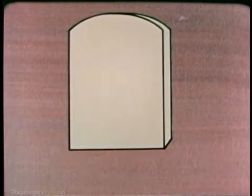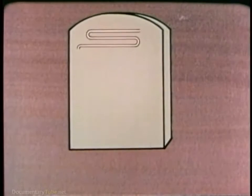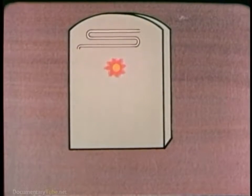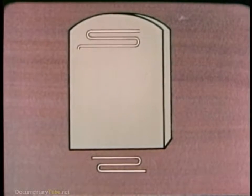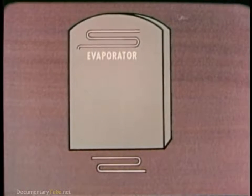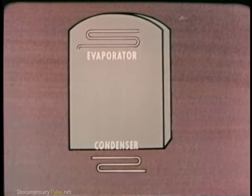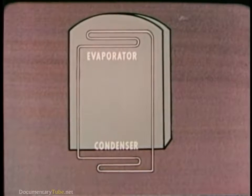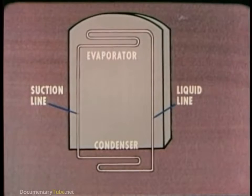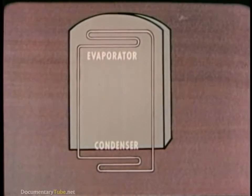Refrigeration is the transfer of heat from a place where it is not wanted to a place where it is unobjectionable. To do this, a refrigerator uses a unit inside the box that takes up heat and a unit outside the box that gets rid of it. These units are called the evaporator and the condenser. They are tied together by connecting lines, referred to as the suction line and the liquid line.